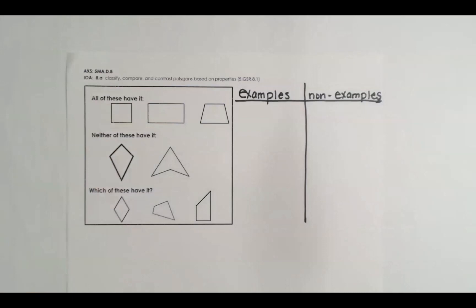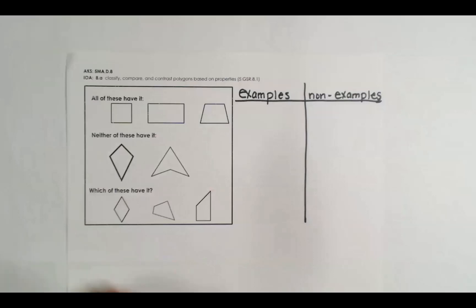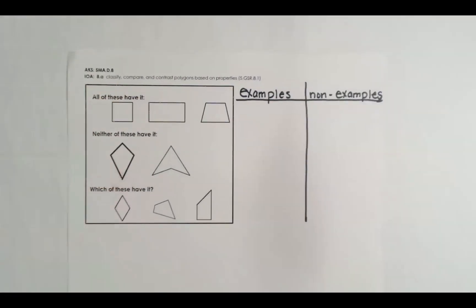For this example, we have some polygons that share an attribute. We are to determine that attribute by comparing those polygons to each other and then telling how they differ from the non-examples. Finally, we will determine which of these shapes has that mystery attribute. Looking at the first polygons, we compare them and record their attributes in this T-chart, labeled 'examples' for attributes present in those shapes and 'non-examples' for attributes not present in those shapes but present in the non-examples.